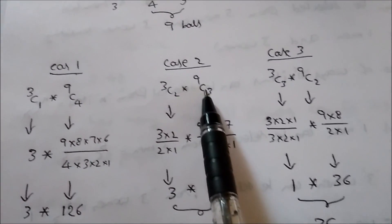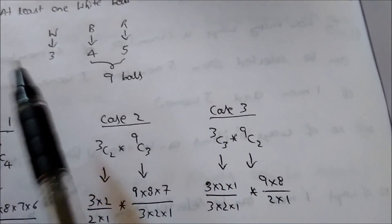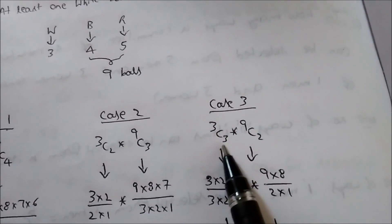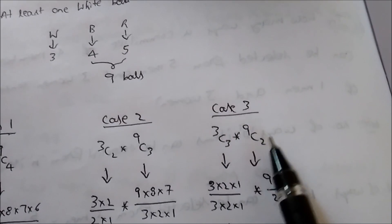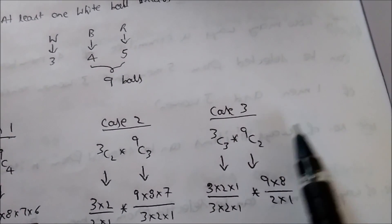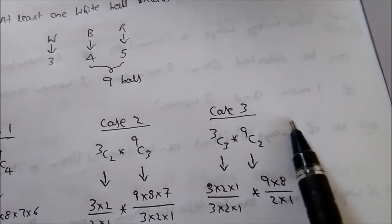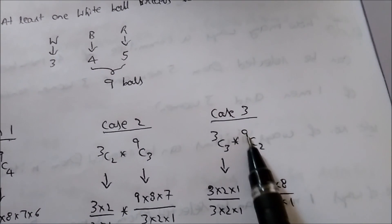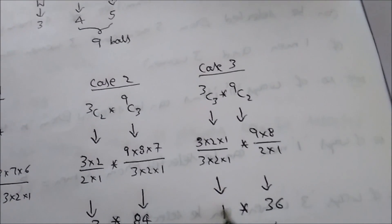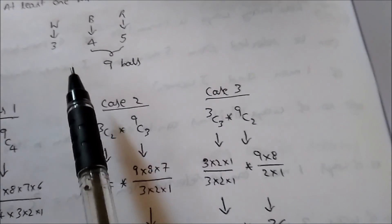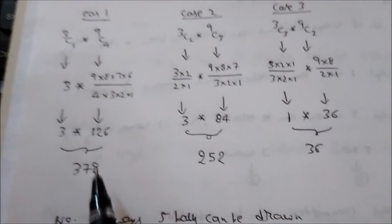Case 3: We draw three white bars. From three white bars we choose all three: 3C3 = 1. The remaining two bars are drawn from the nine bars: 9C2 = 36. So in 36 ways we can draw three white bars and two other bars from the given bars.